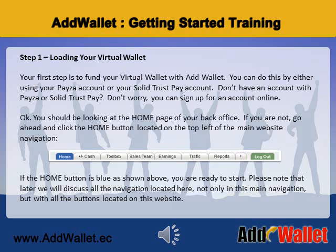Your first step is to fund your virtual wallet with AdWallet. You can do this by either using your PESA account or your SolidTrust Pay account. Don't have an account with PESA or SolidTrust Pay? Don't worry, you can sign up for an account online.